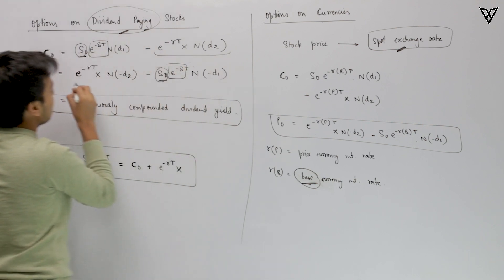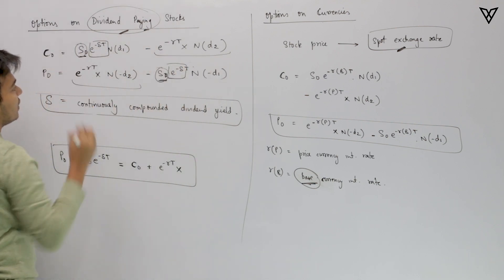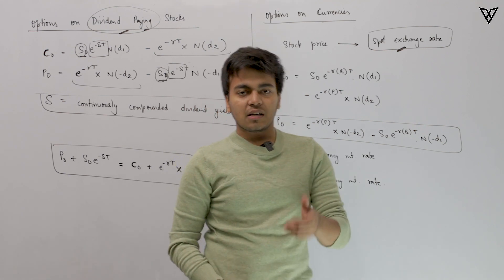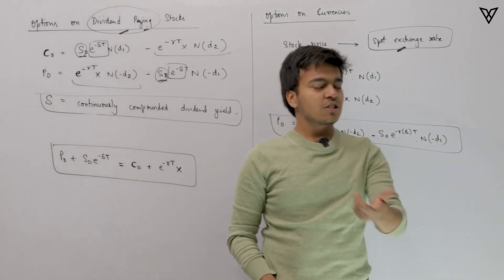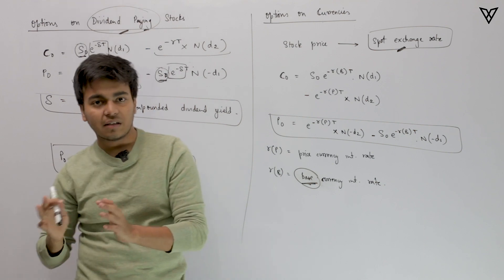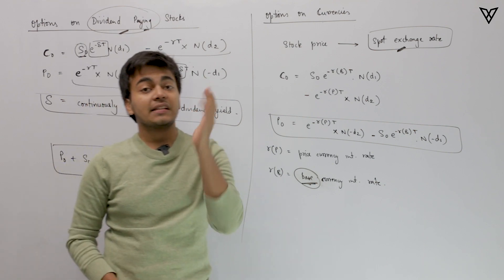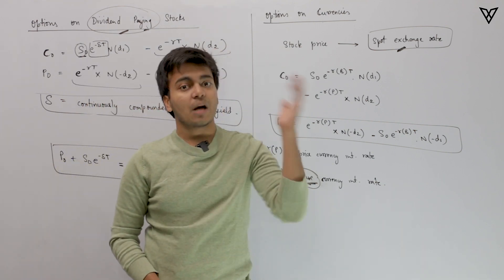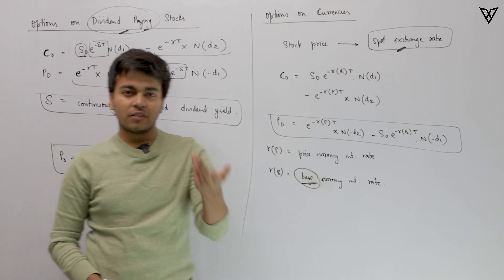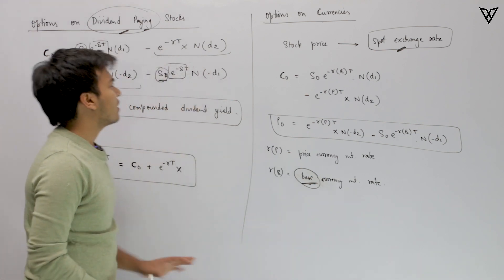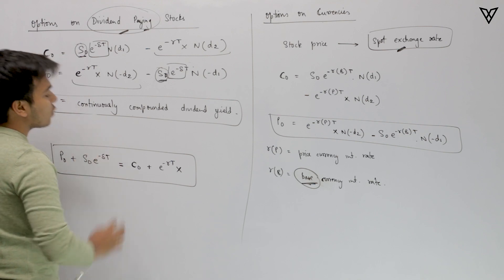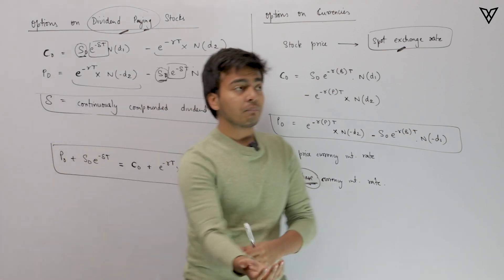The rest of the formula remains the same. The dividend yield part is to be attached with your spot price and the rest of the equation stays unchanged. It is done in the exact same way as we did it in chapter 1 when we were talking about forward contracts with continuous dividend yield. So that is quite easy and simple to understand.